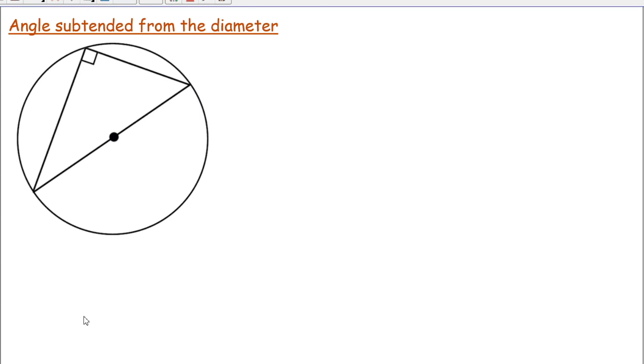So, what we can do is we can conclude and say that the angle subtended at the circumference by the diameter is always 90 degrees. So, we can say the angle subtended at the circumference.